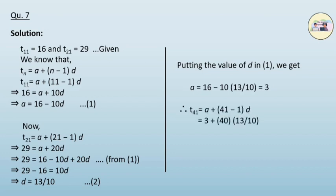Therefore, t_41 is equal to a plus 41 minus 1 into d, which is 3 plus 40 into 13 by 10. Therefore, we get t_41 as 55.